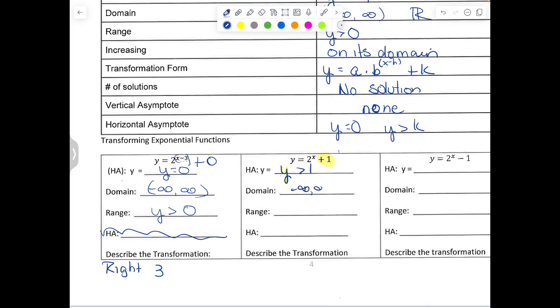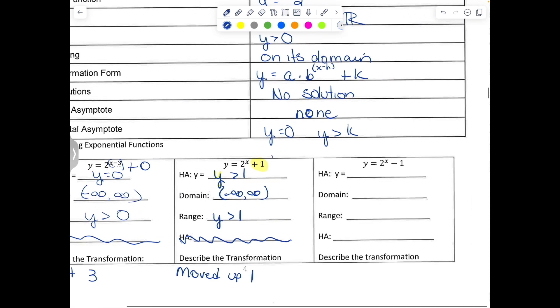My domain is going to be all real numbers for each of these exponentials. So my range is going to be greater than that asymptote. And so for the transformation here, we moved up 1 because that 1 is outside of the parenthesis.